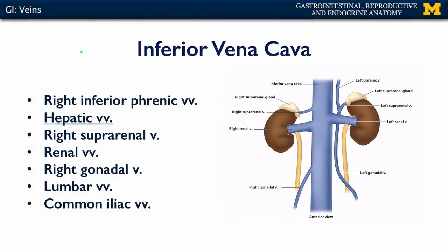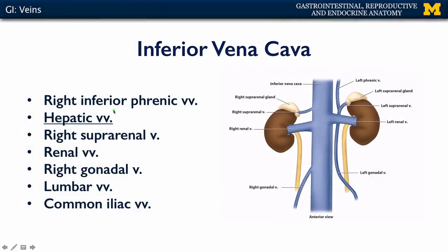Let's talk about the veins which serve the gastrointestinal tract. The inferior vena cava is destined for the right atrium and drains all of the structures inferior to the diaphragm. What's conspicuously absent from the inferior vena cava are corresponding branches to the celiac trunk, the SMA, and the IMA. The gut tube is drained through the hepatic portal system to the liver, and then the liver is drained via several hepatic veins that feed into the inferior vena cava.